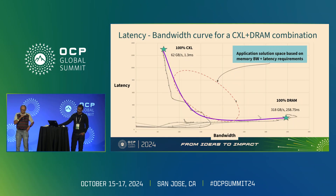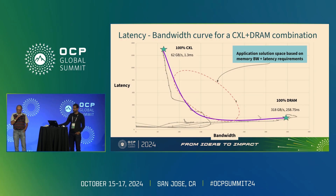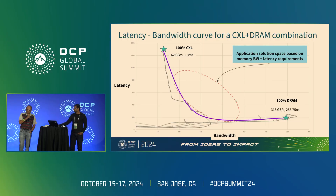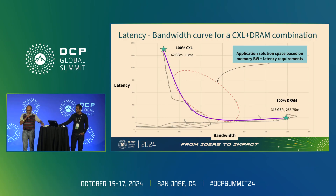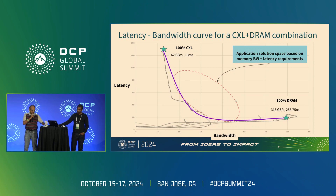Next slide. If you look at this as a bandwidth curve — we've plotted the latency-bandwidth curve shown earlier — you can see 100% CXL has high latency, 100% DRAM has a certain bandwidth. And then if you go all the way across, this is where we get with interleaving.